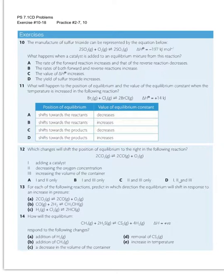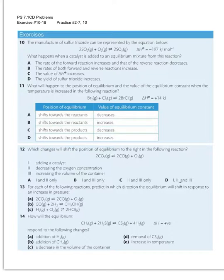Welcome. In this video, I'm going to go over solutions to the second set of problems, or the second half of the chapter from topic 7 on equilibrium. Starting with exercise 10, they talk about the manufacture of sulfur trioxide, and as you read about in your book, this is kind of an important process in industry.